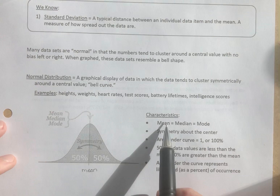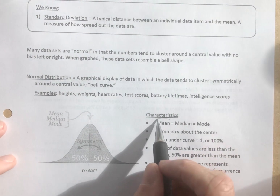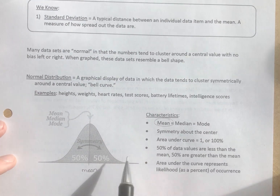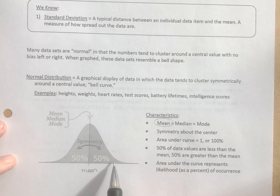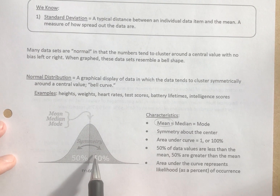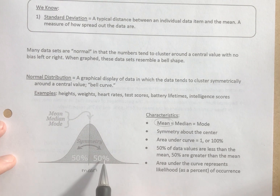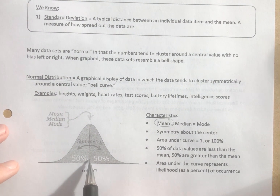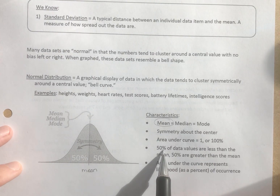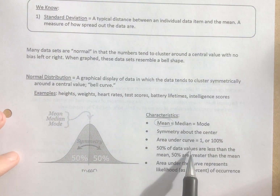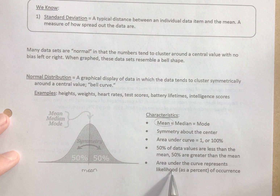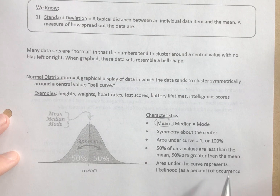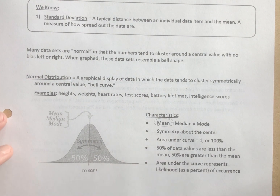The characteristics: the mean equals the median equals the mode, but we focus on the line representing the mean. It is symmetrical about the center. The area under the curve is 1, or more usefully, the area under this curve represents 100% of our data. 50% of the data values are less than the mean and 50% are greater, and the area under the curve represents the likelihood as a percent of occurrence.